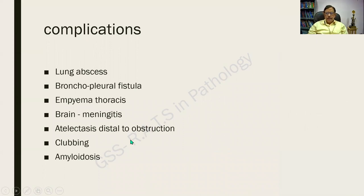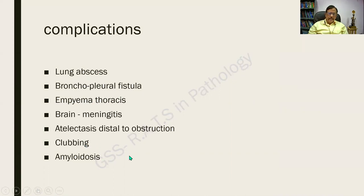The complications listed are: lung abscess, bronchopleural fistula (a fistulous tract between the pleura and bronchus), empyema thoracis (collection of pus in the thoracic cage), meningitis in the brain, and collapse of bronchial segments. This classification is an important and repeatedly asked clinical question in general medicine.